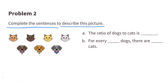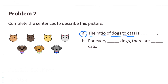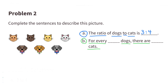Number 2. Complete the sentence to describe this picture. Part A: The ratio of dogs to cats is 3 to 4. For every 3 dogs, there are 4 cats. Part B: For every blank dogs, there are blank cats.